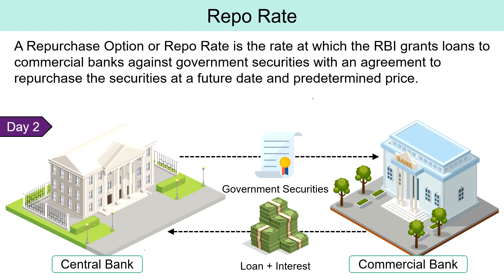Let's understand the concept of repo rate with an example. Suppose ABC Limited is a commercial bank that borrows 1 crore from the central bank and the repo rate is 4% per annum. On the first day, RBI grants a loan to ABC worth Rs. 1 crore against collateral. And on the second day, the commercial bank repays the amount along with interest at 4% per annum, i.e., Rs. 1096. RBI then transfers the government securities back to the bank.